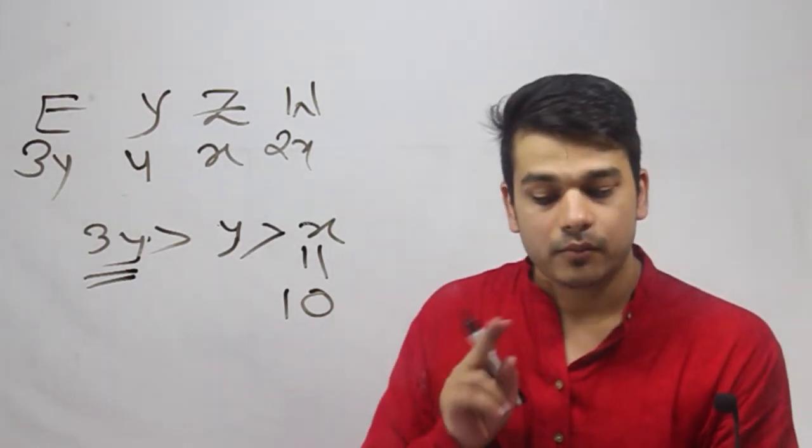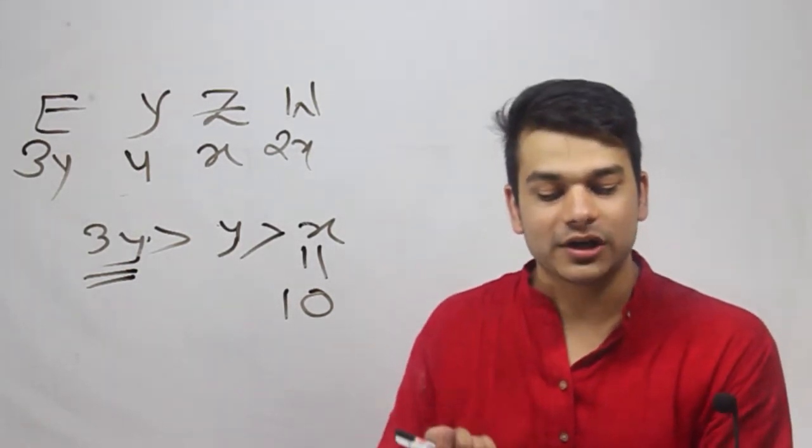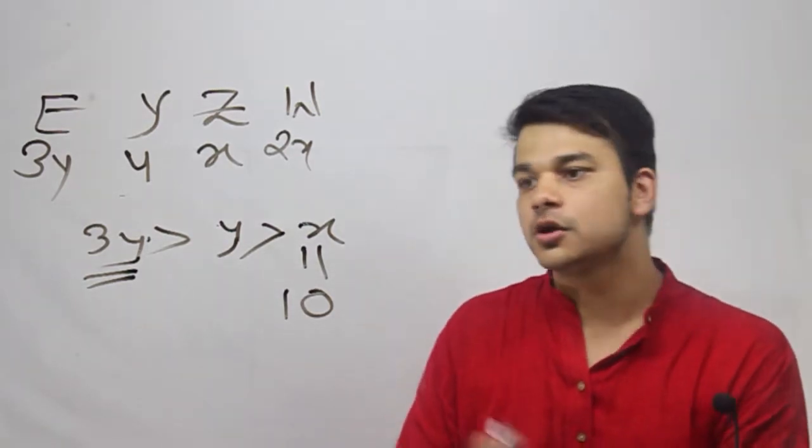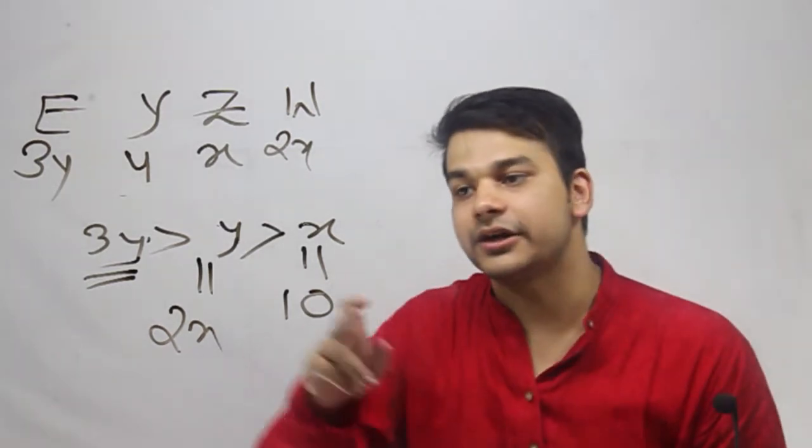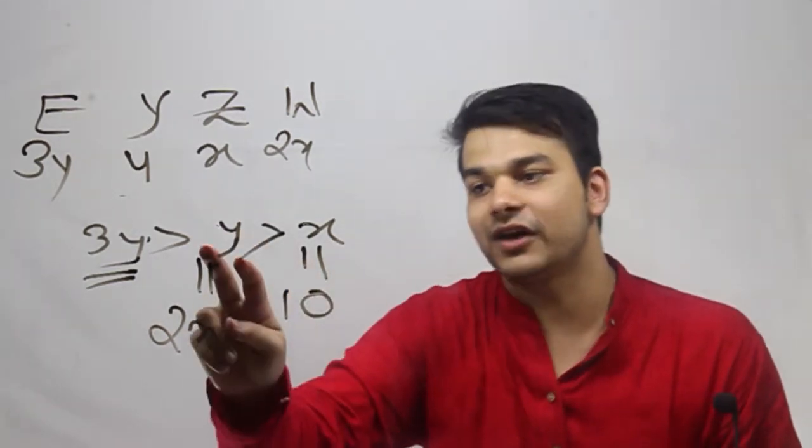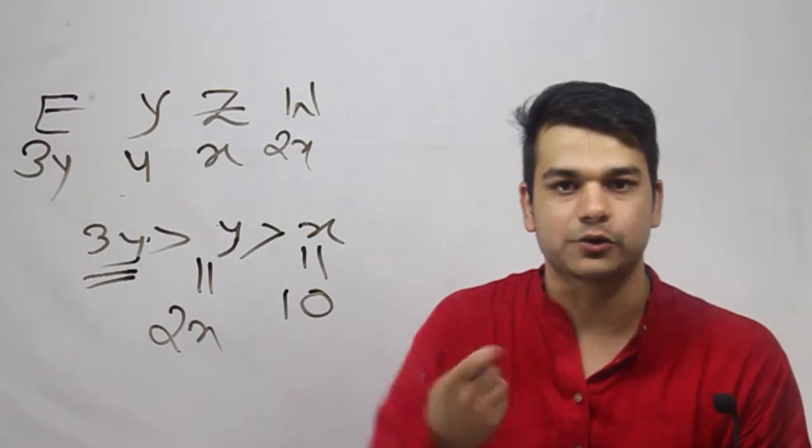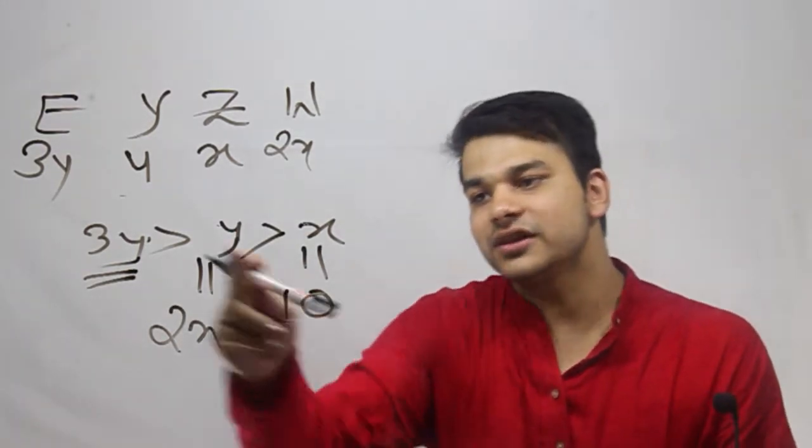Option B says, both Yukesh and Vahida are older than Zaheer by same number of years. So y is equal to 2x. This is given to us. But it hasn't been stated the value of y or x or 2x, whatever. So even this is not sufficient.